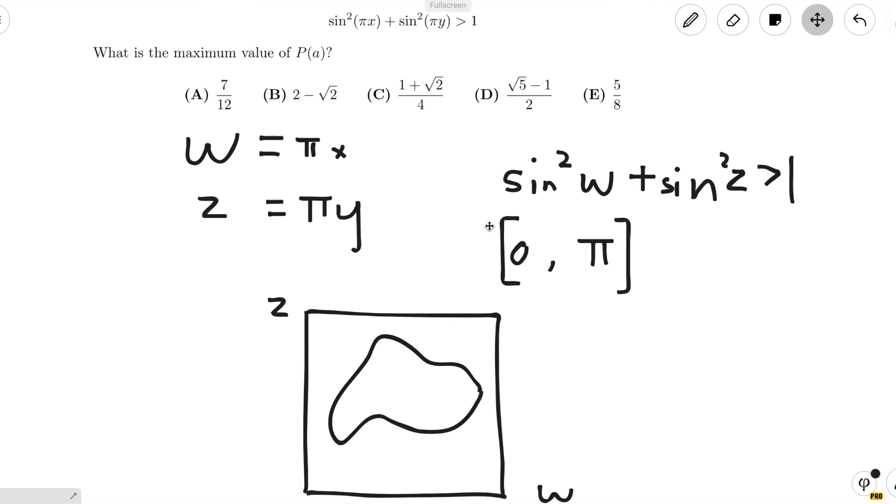it basically means we want to find the vertical line such that the area that works to the left of it divided by the total area is the greatest.